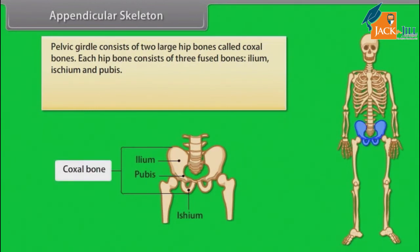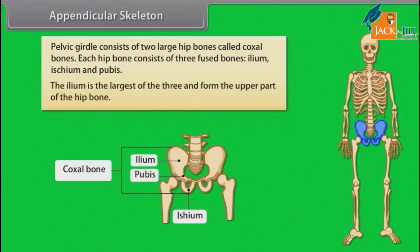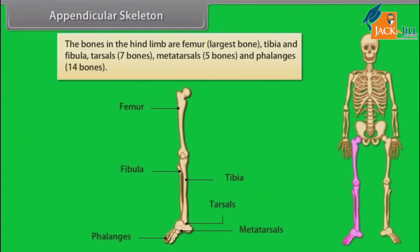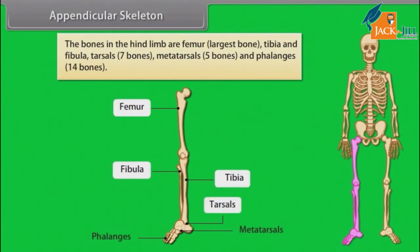The pelvic girdle consists of two large hip bones called coxal bones. Each hip bone consists of three fused bones: ilium, ischium, and pubis. The ilium is the largest of the three and forms the upper part of the hip bone. The bones of the hind limb are: femur (the largest bone), tibia and fibula, tarsals (7 bones), metatarsals (5 bones), and phalanges (14 bones).